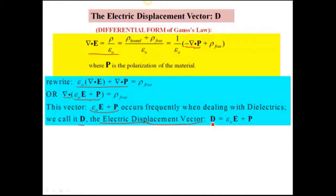D is equal to epsilon zero capital E plus P. So you can see it contains the total E field, which remember is dependent upon both the free charge and the bound charge. We add in the polarization here.